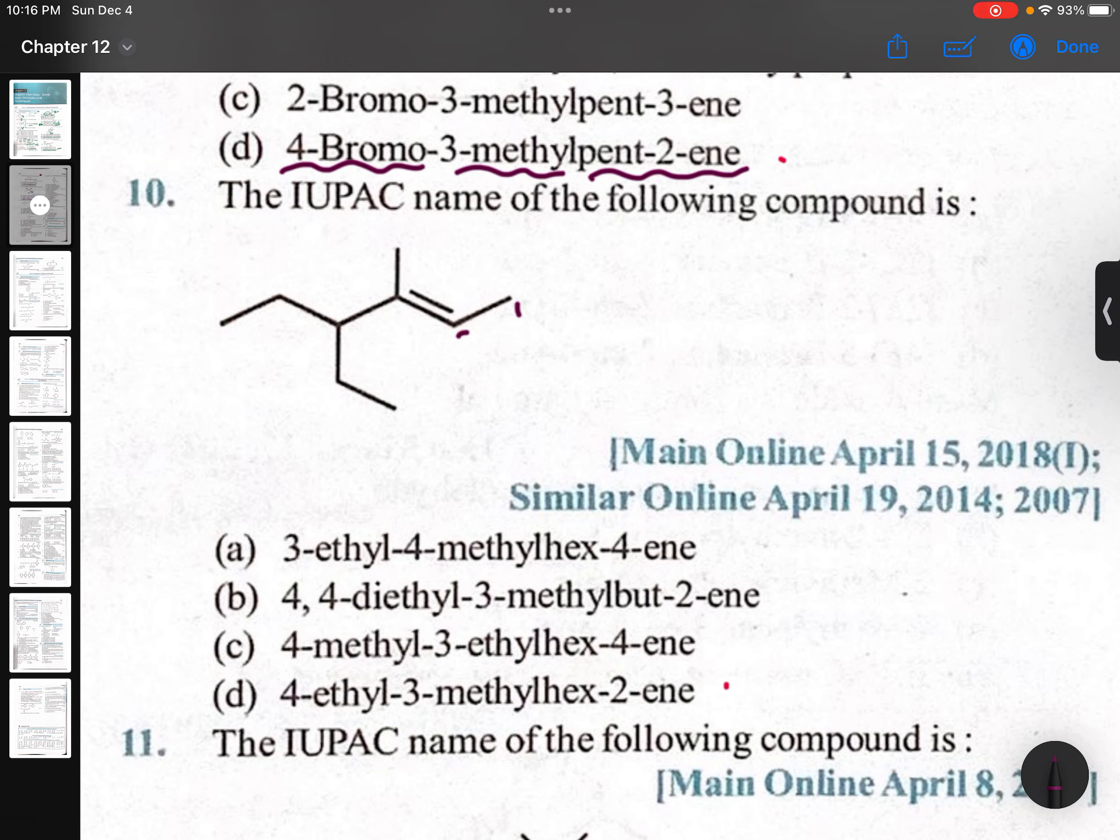The IUPAC name of the following compound: it gets more priority, double bond. One, two, three, four, five, and six - so it is hex. 3-methyl, 4-ethyl. Alphabetical order: E comes first, so 4-ethyl-3-methyl-hex-2-ene.